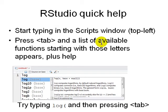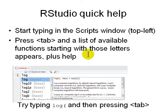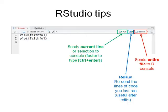RStudio help also has something called command completion. You press Tab to see a list of available variable names and functions. For example, you just type 'log' and then press Tab, and you will see all the functions starting with 'log' in the results tab — just like code completion.